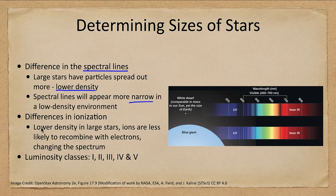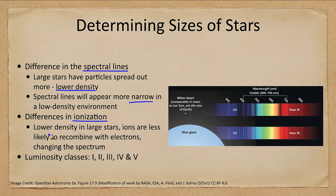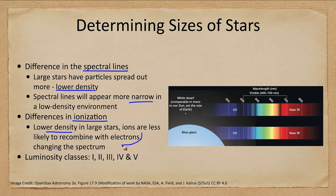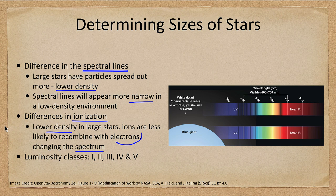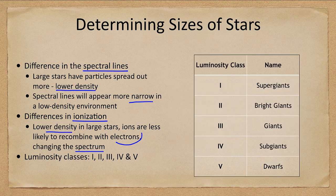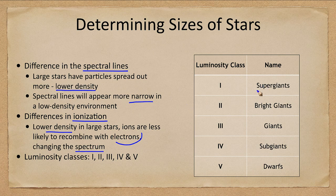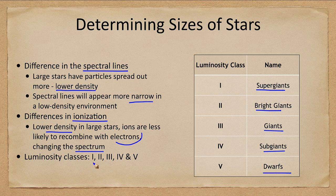When we look at these, we can look again at the differences in ionization. Lower density in large stars means that the ions are less likely to recombine, which changes the spectrum that we see. And we see four luminosity classes here, which are the supergiant stars, the bright giants, the giants, the subgiants, and the dwarfs. Those are luminosity classes Roman numeral one through five.